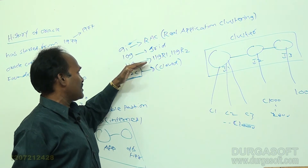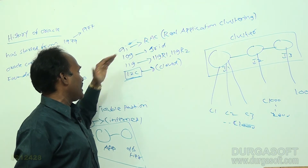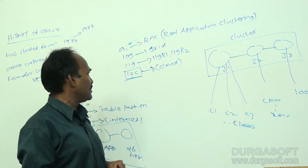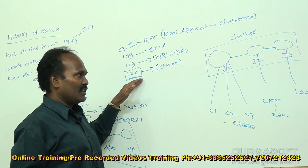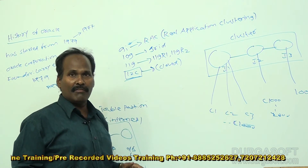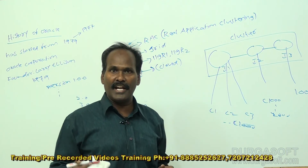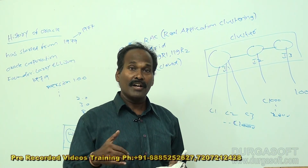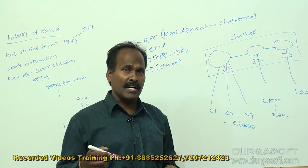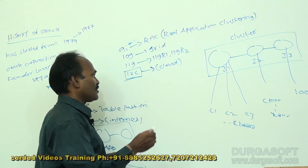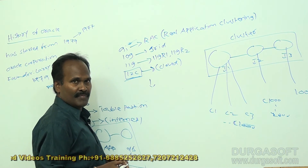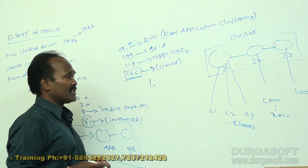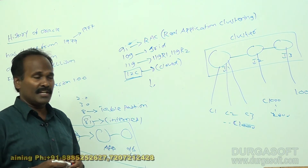Oracle 10G is almost similar to 9i but with major differences. Oracle 11G also has two versions: 11G R1 and 11G R2. In Oracle 12c, even without having Oracle software installed, you can run it from a cloud machine, which reduces business costs — that is the major advantage of 12c cloud computing.